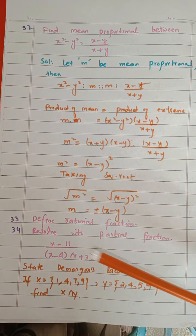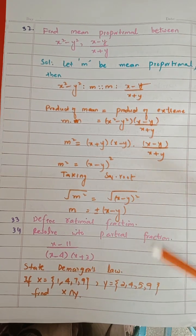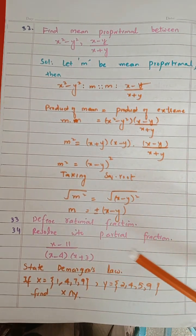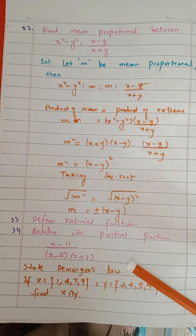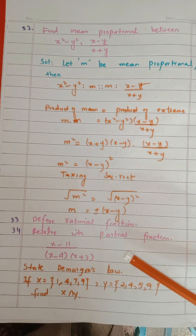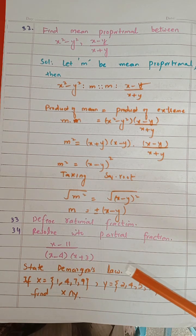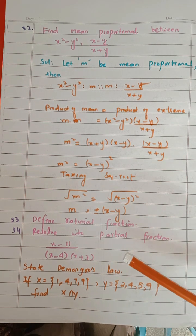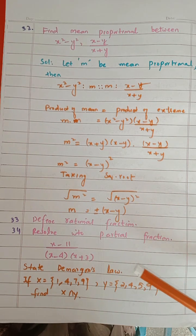Next, define rational fraction and resolve into partial fractions. We already solved this question in some previous paper. Resolve means you have to find the values of A and B completely until the end.